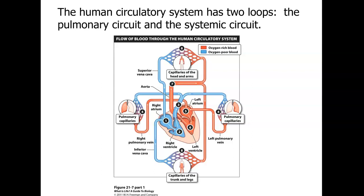Following the circuit: right atrium (1) → tricuspid valve → right ventricle (2) → pulmonary valve → pulmonary trunk (3) → pulmonary arteries → right and left lungs → exchange at pulmonary capillaries (4) → pulmonary veins → left atrium (5) → bicuspid/mitral valve → left ventricle (6) → aortic valve → aorta (7) → upper body/head/arms or lower trunk/legs (8).